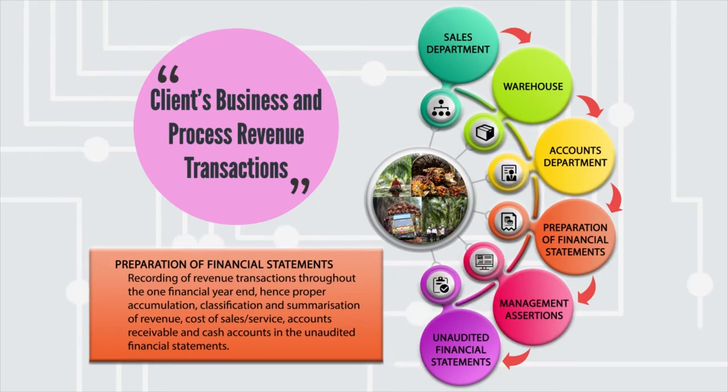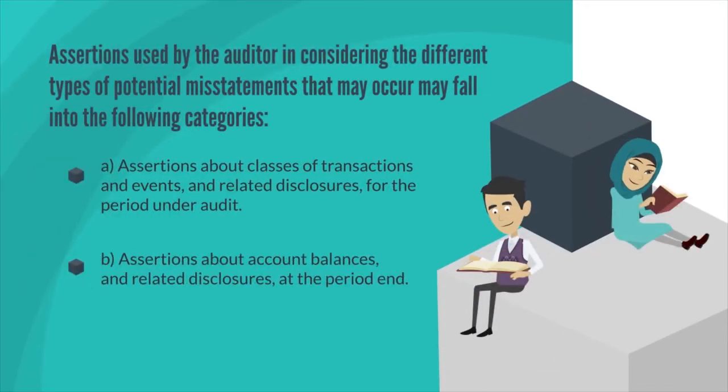These accounts contain management assertions. Generally, all management assertions are relevant for each of the accounts as presented under ISA 315. In its explanatory note A, subsections A and B divide management assertions into two categories: subsection A covers classes of transactions and events and related disclosures, while subsection B covers account balances and related disclosures at period end. Different accounts highlight specific management assertions — for instance, revenue focuses more on occurrence or validity, compared to an expense account which is more focused on completeness.